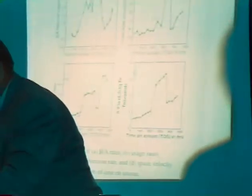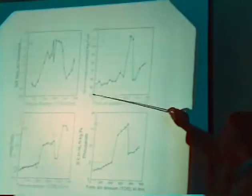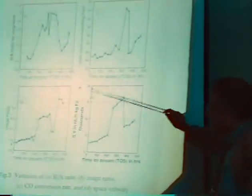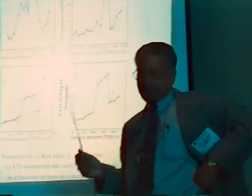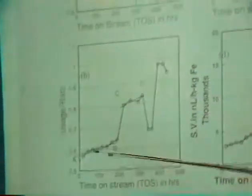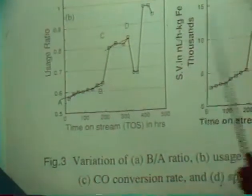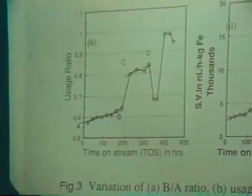Now I will show you some correlations that we observe from the results of this Laporte run. This is how the space velocity varies as a function of time on stream. And this is the conversion of CO, gram-moles CO converted. This is the usage ratio, how it varies with time on stream. Usage ratio is defined as number of gram-moles of H2 converted per mole of CO converted. It signifies and reflects the water-gas shift activity. Low usage ratio means higher water-gas shift activity, and a high value of usage ratio means low water-gas shift activity.